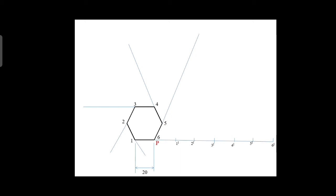Measure the distance between P and 1 dash — with 1 as center, locate point P1 on the extension line of 1. Next, P to 2 dash as radius, 2 as center — locate point P2 on the second extension line. Then P to 3 dash as radius, 3 as center — locate point P3. Then P to 4 dash as radius, 4 as center — locate point P4. Then P to 5 dash as radius, 5 as center — locate point P5. Then P to 6 dash as radius — locate point P6 on the 6th extension line. Finally, join all the points by freehand sketch to get the involute curve on the hexagon.